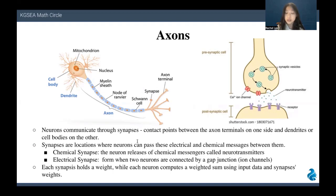Neurons communicate through synapses, the contact point between an axon terminal on one side and dendrites or cell bodies on the other. Here in a 20 or 40 nanometer wide gap, electrical signals coming via the axon are converted into chemical signals through the release of neurotransmitters, and then promptly converted back into electricity as transferred information moves from neuron to neuron. Synapses are locations where neurons can pass these electrical and chemical messages between them. There are two types of synapses. The first one is called a chemical synapse, where the neuron releases a chemical messenger called neurotransmitters. Electrical synapses form when two neurons are connected by a gap junction, also known as ion channels.